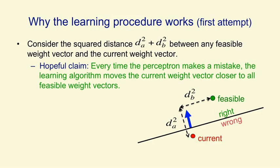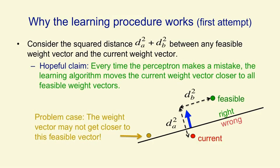Now this is almost right, but there's an unfortunate problem. If you look at the feasible weight vector in gold, it's just on the right side of the plane that defines one of the training cases. And the current weight vector is just on the wrong side, and the input vector is quite big. So when we add the input vector to the current weight vector, we actually get further away from that gold feasible weight vector. So our hopeful claim doesn't work, but we can fix it up so that it does.